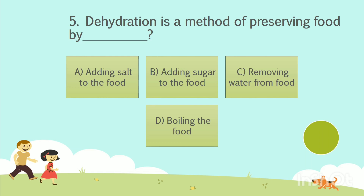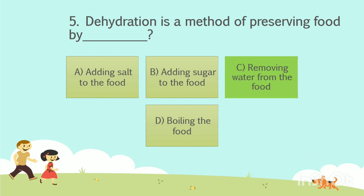Dehydration is a method of preserving food by — . Option A: adding salt to the food. Option B: adding sugar to the food. Option C: removing water from the food. Option D: boiling the food. Your time starts now. The answer is Option C, removing water from the food.